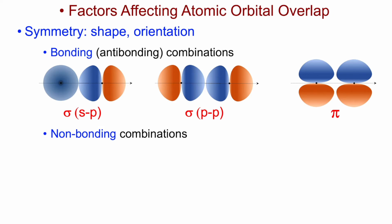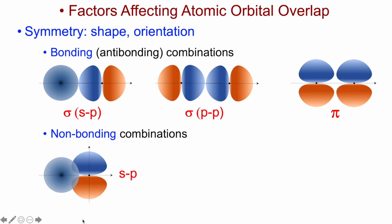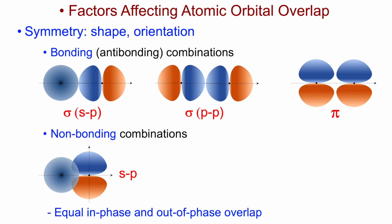We can also get so-called non-bonding combinations, again dependent on the shape and orientation of the two atomic orbitals. Here's an example where an s orbital overlaps side-by-side with a p orbital. Any constructive overlap between the two — blue and blue, or plus phase and plus phase — comes with an equal amount of out-of-phase, destructive interference. The degree of overlap in the two regions is identical, so we get nothing in the end. The energy of the resultant molecular orbital is the same as that of the two atomic orbitals, which is why we call it a non-bonding combination.